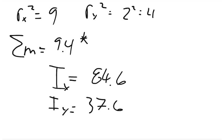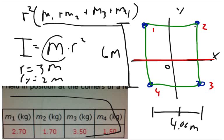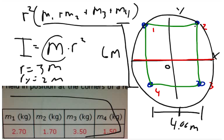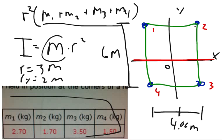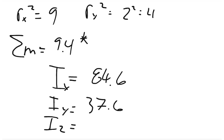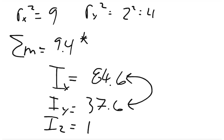Lastly, it wants the moment of inertia if the system was spinning around the z-axis — as if there was a rod sticking right through the origin coming out toward you and the whole thing was spinning around it. The interesting thing is we can just add the x and y results together: 84.6 plus 37.6 equals 122.2 kg·m².